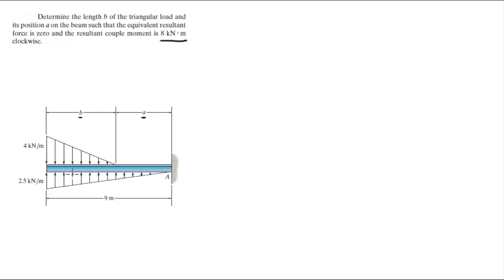Look at the bottom one. It has an equivalent force F1 that acts one third from the long tall edge of the triangle. F1 is equal to 2.5, which is the height of this triangle, times 9 meters divided by 2, which comes out to be 11.25 kN.